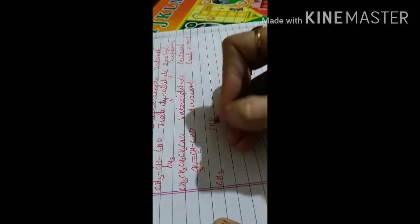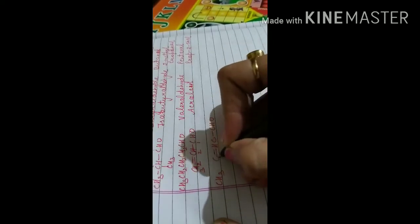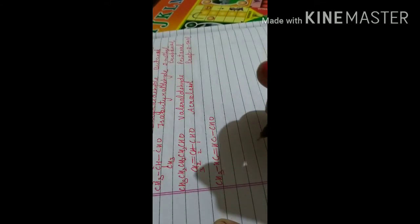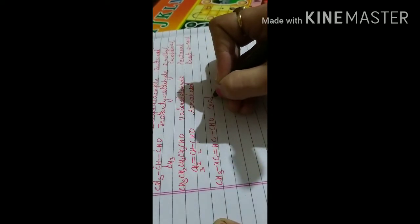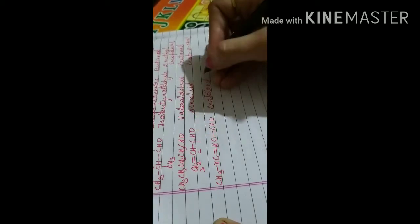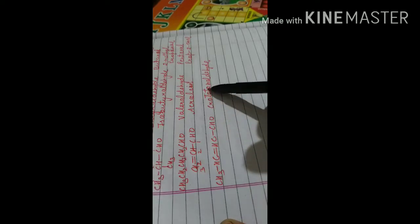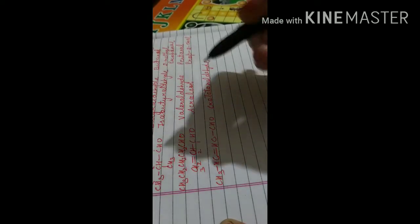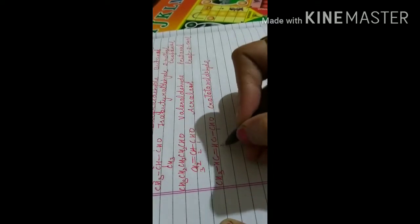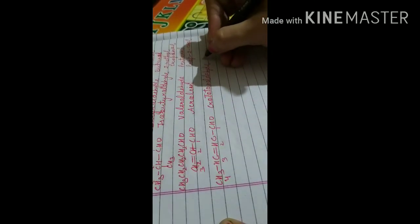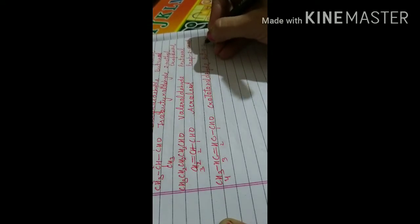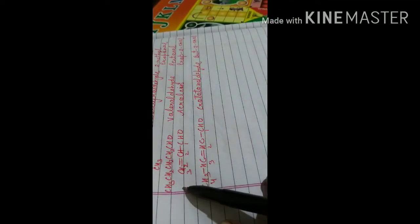Another case: the functional group is linked to a double-bonded carbon, and the next carbon is linked with an alkyl group — CH3-CH=CH-CHO. In common naming this is crotonaldehyde. In IUPAC naming there are four carbons numbered 1 to 4, with a double bond at position 2, so you write but-2-enal.